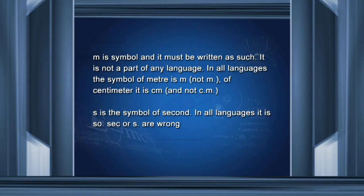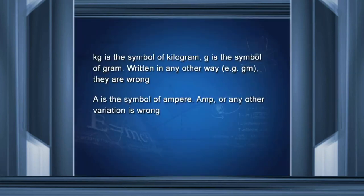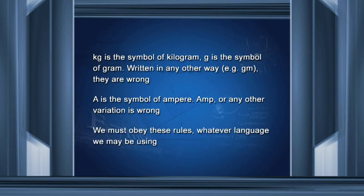Similarly, kg is the symbol of kilogram, and g is the symbol of gram. Written in any other way, such as 'gm', they are wrong. Capital A is the symbol of ampere — 'amp' or any other variation found in some books is wrong. We must obey these rules whatever language we may be using for learning. Another advantage of the SI system is that it is a metric system, and the smaller and larger units of the base units are expressed as multiples or sub-multiples.